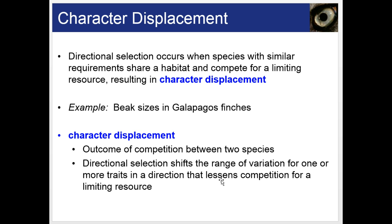Character displacement: directional selection — a type of natural selection — occurs when species with similar requirements share a habitat and compete for limiting resources, resulting in character displacement, such as with the finches and their beak sizes in the Galápagos Islands. The outcome is that directional selection shifts the range of variation for one or more traits in a direction that lessens competition for a limiting resource.